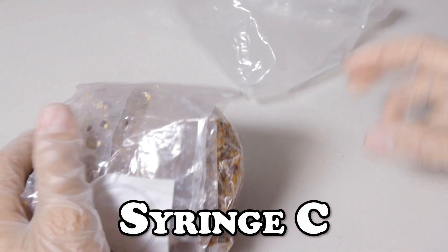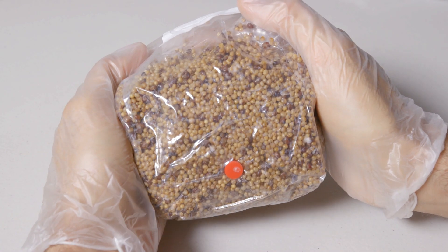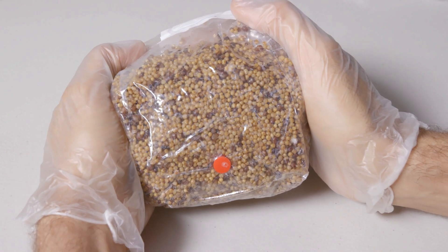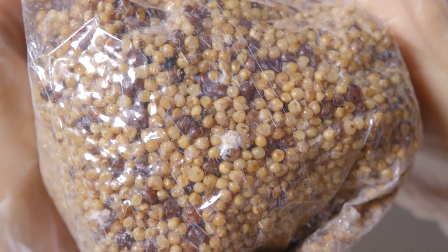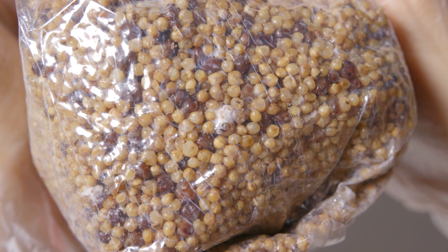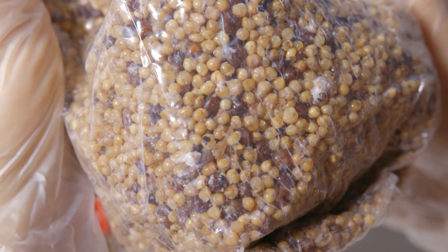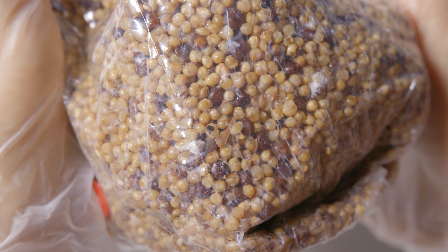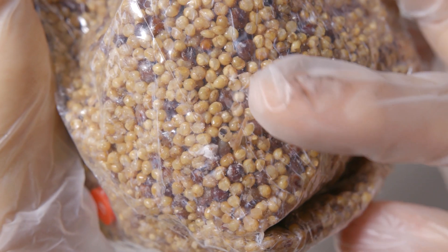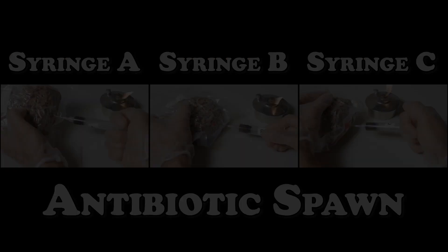Finally bag C. We do notice that there are some spots of that wispy mycelium dispersed throughout the grain, but not a whole lot of activity happening here. As we get a close up we can see the individual grains beginning to essentially melt against the bag as the bacteria begins to break it down. Let's now move on to our next test where we use the same syringes to inoculate grain bags treated with an antibiotic.